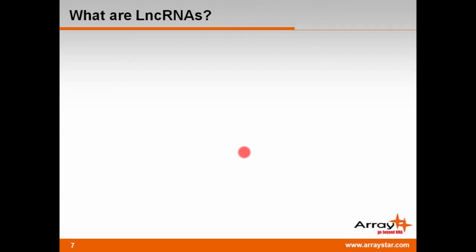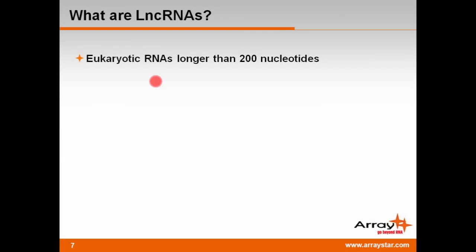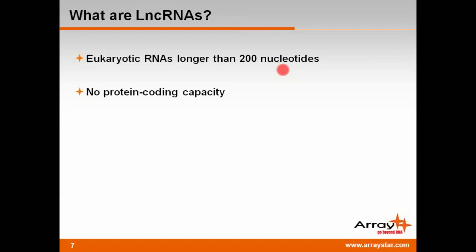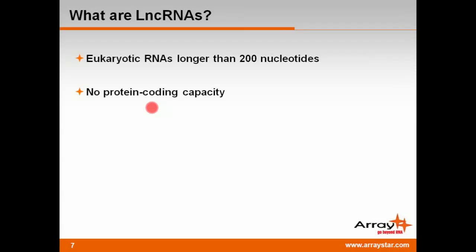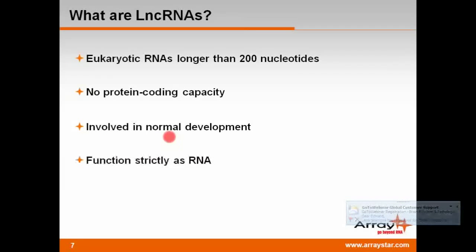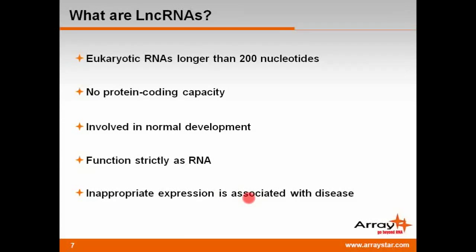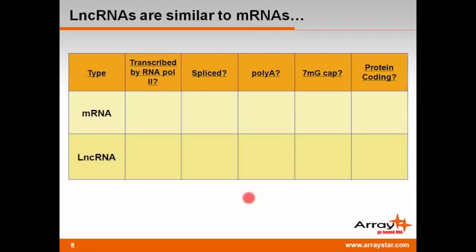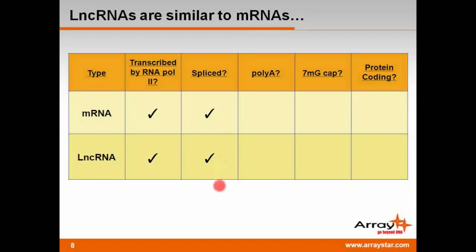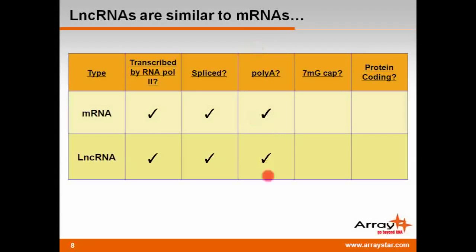LNCRNAs are defined as eukaryotic RNA molecules greater than 200 nucleotides in length. In addition, they appear to have no protein coding capacity or no significant open reading frames. Further, LNCRNAs are involved in normal development, they function strictly as autonomous RNA molecules, and their inappropriate expression can be associated with disease. The expression and structure of LNCRNAs is very similar to that of protein coding messenger RNAs. Both are transcribed by RNA polymerase II, both can be spliced from intron-containing precursors, both are often polyadenylated, and both contain 7-methylguanosine caps.